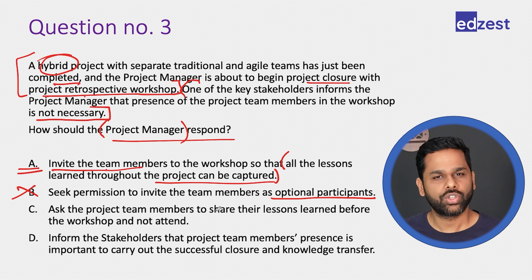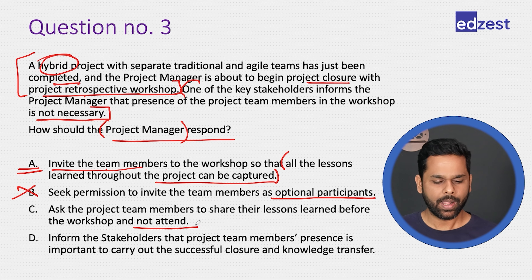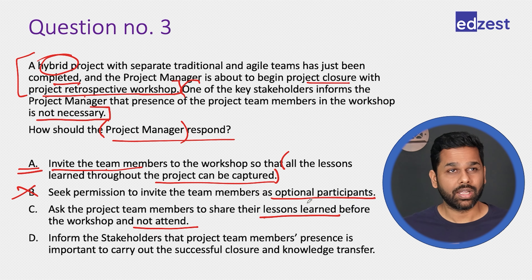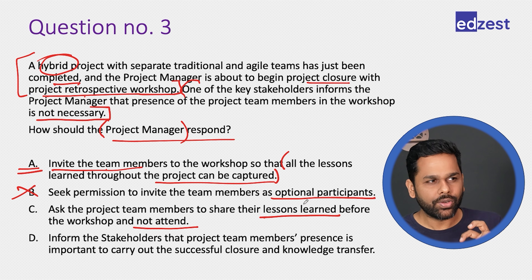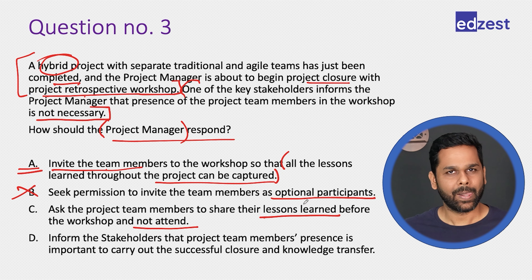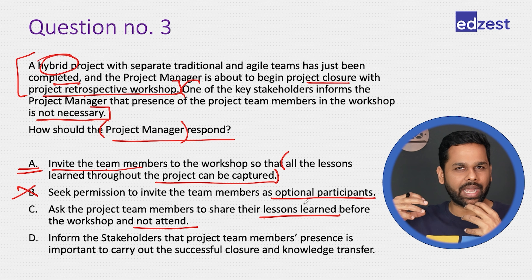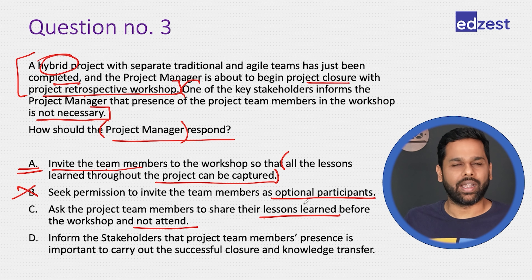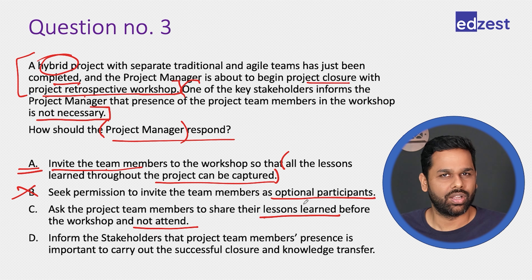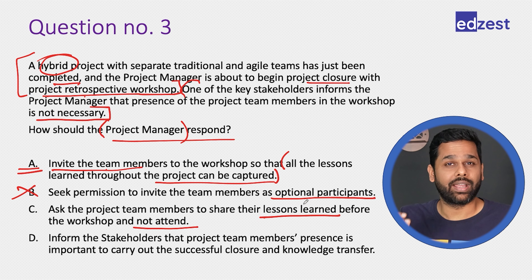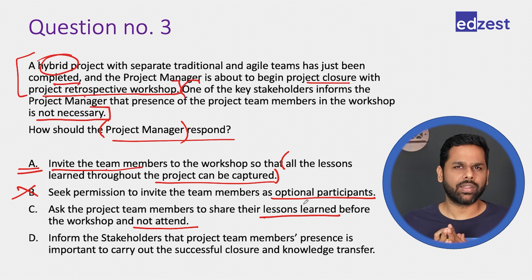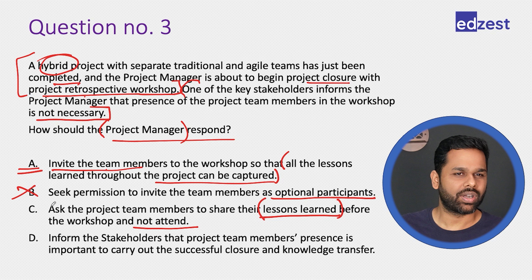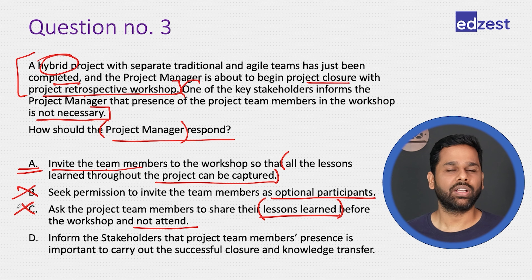Option C: ask the project team members to share their lessons learned before the workshop and not attend. This could be a solution, but just sending the lessons learned without having a discussion might not be helpful. Just imagine asking team members to write down lessons learned — if you don't discuss with them, how do you know what is written? Everybody has writing skill, but what is in their mind may not translate perfectly into writing. Discussion is needed to verify understanding.